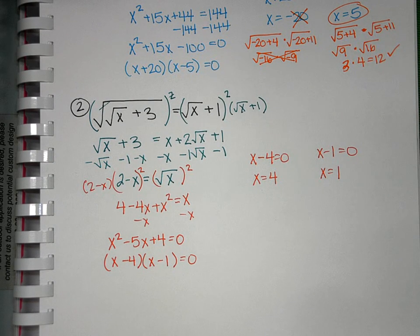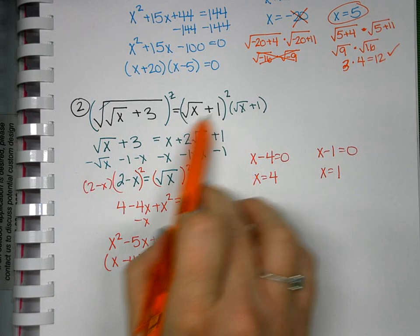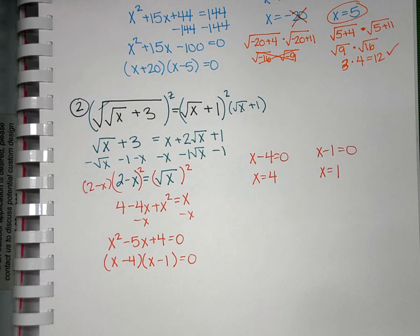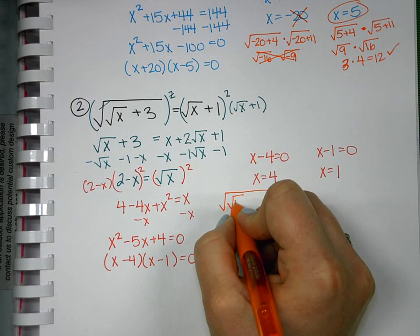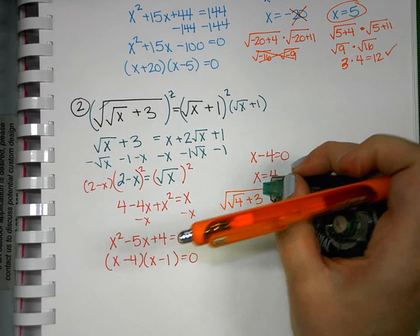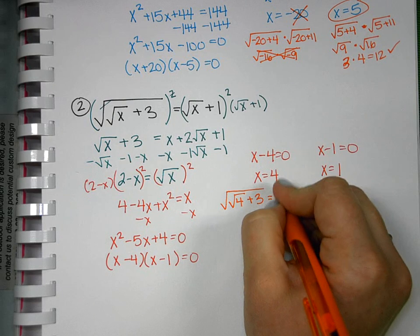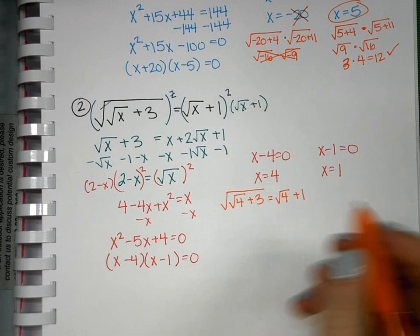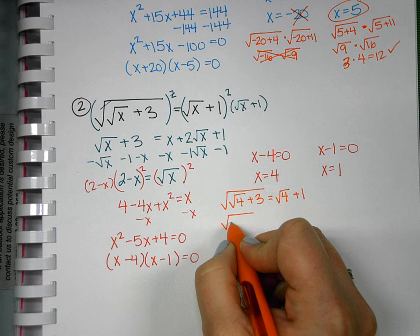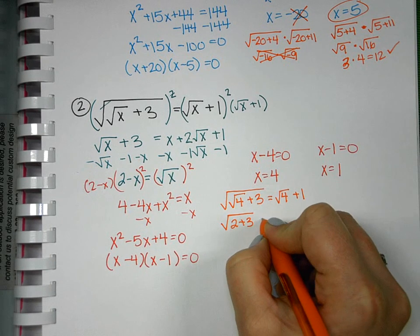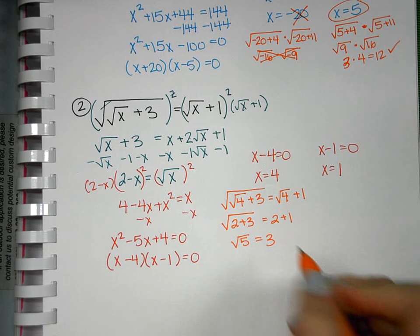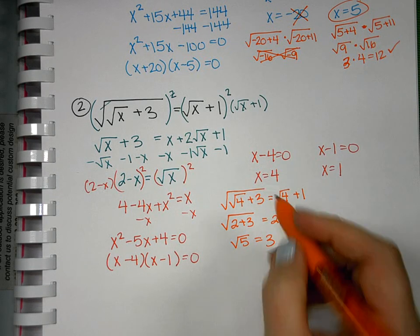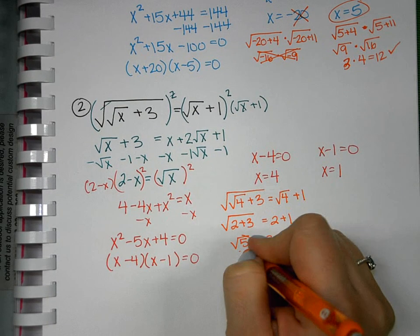But again, we have to go back and check because we want to make sure that these actually work. We use our original, before we've done anything to it, equation. So I have my square root of 4 plus 3 equals the square root of 4 plus 1. Inside my first radical, I'll get 2 plus 3, and then over here 2 plus 1. So square root of 5 equals 3. That doesn't actually equal. So because these don't equal, this isn't true, so neither is this.